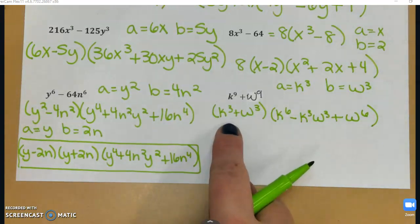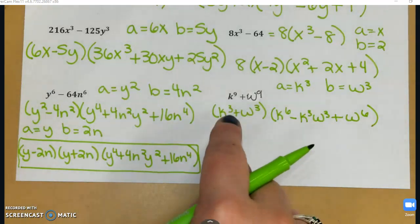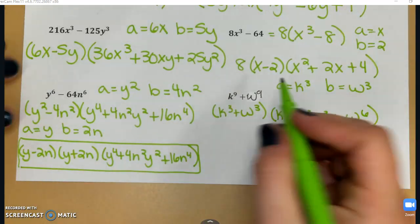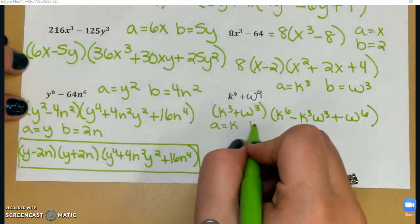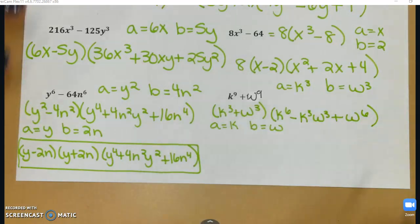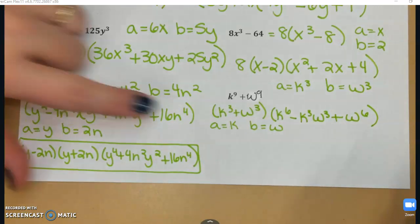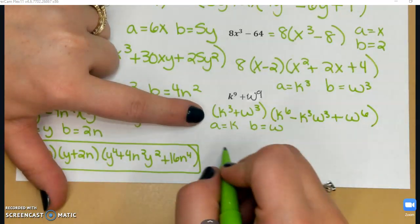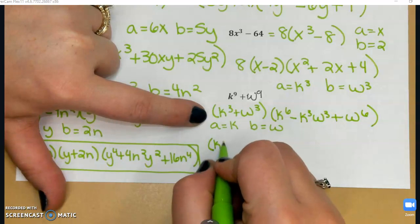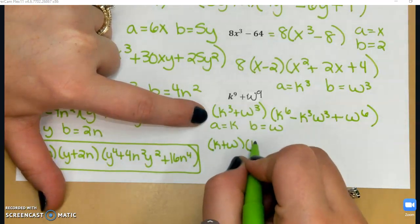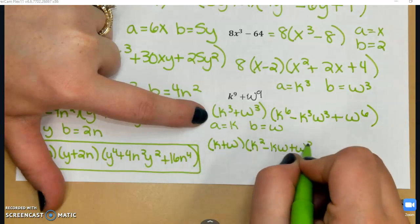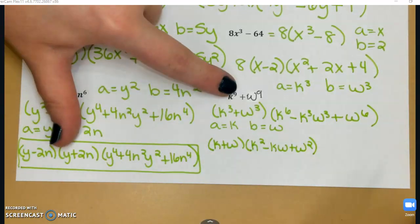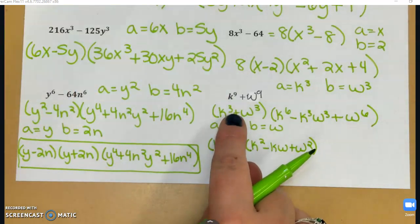So I'm going to factor this with sum of two cubes a second time. So for the second factorization, a is going to be k and b is w. So I'm just going to factor that one more time with my sum of two cubes. So that is going to be (k + w)(k² - kw + w²). So this was my sum of cubes from the first parentheses.